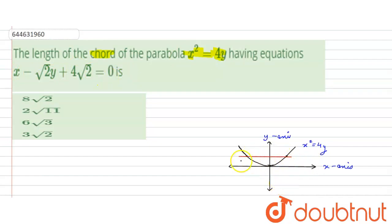This is the graph of parabola x² = 4y. Let us say this chord intersects the graph at (x₁, y₁) and (x₂, y₂) at two points. So what we have: the equation of parabola is x² = 4y.